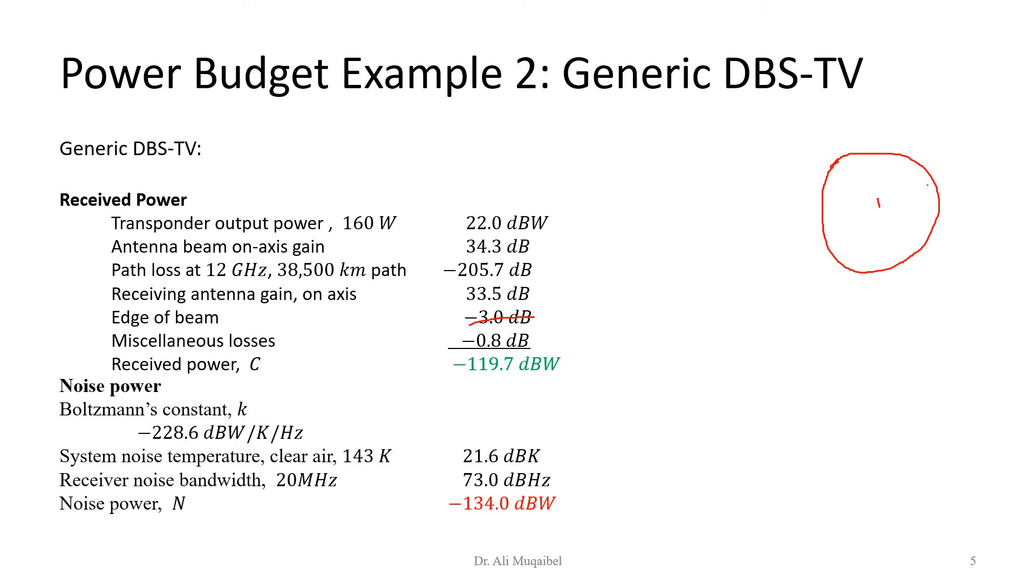If you combine the losses with the gains, you'll find that you get the received power to be -119.7 dBW. These are kind of real numbers for the case of digital broadcasting satellite. For the case of noise, we will do the same: we have k, the temperature, and the Boltzmann constant, and we know the bandwidth. Multiplying them in linear scale or adding them in log scale will result in -134 dBW.